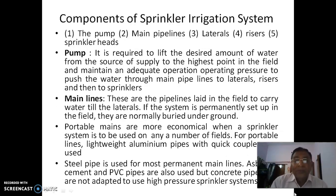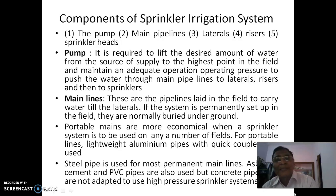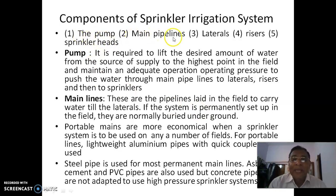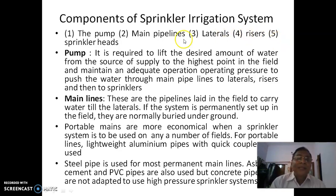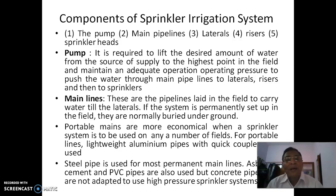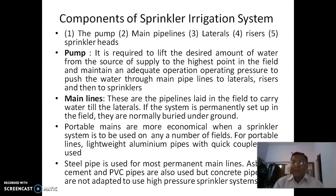Let us go through the components of the sprinkler irrigation system. The main components are: the pump, main pipelines, laterals, risers, and sprinkler heads. There are also some minor components we will come back to later.